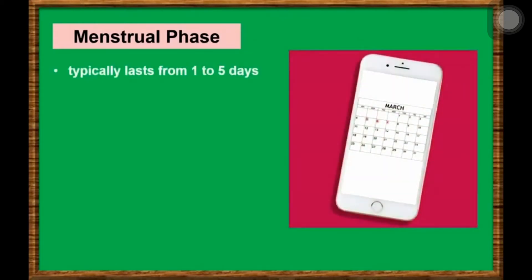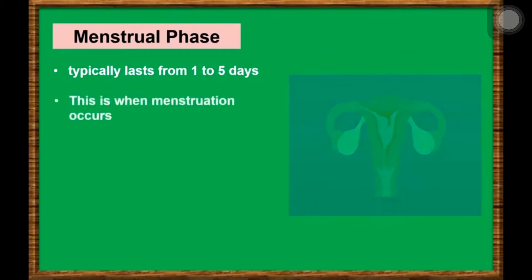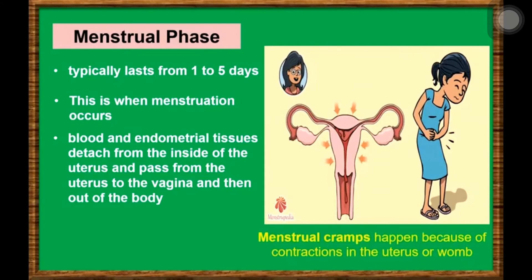The phases of the menstrual cycle. The menstrual cycle begins with the menstrual phase, which typically lasts from 1 to 5 days. This is when menstruation happens. During the menstrual phase, arteries that supply the endometrium of the uterus constrict and break. Gradually, blood and endometrial tissues detach from the inside of the uterus and pass from the uterus to the vagina and then out of the body. This is the phase where most girls experience menstrual cramps, or the contraction of the uterus.